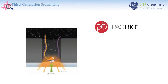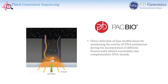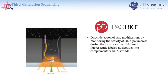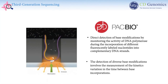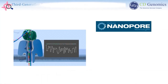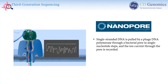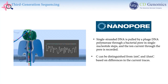PacBio single-molecule real-time sequencing allows the direct detection of base modifications by monitoring the activity of DNA polymerase during the incorporation of different fluorescently labeled nucleotides into complementary DNA strands. The direct detection of various base modifications involves measurement of the kinetics variation in the time between base incorporations. In Nanopore sequencing, single-stranded DNA is passed through a bacterial pore in single nucleotide steps, and the ion current through the pore is recorded. Unmethylated cytosine can be distinguished from 5-methylcytosine and 5-hydroxymethylcytosine based on differences in the current traces.